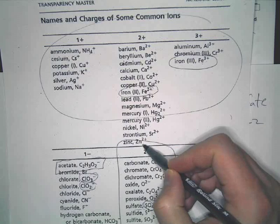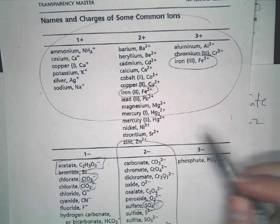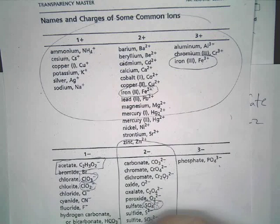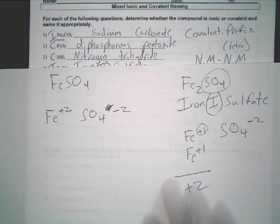Like, you see how it doesn't have anything for, like, zinc? Zinc's always plus two. Yeah. So, there's a couple that are always just something.